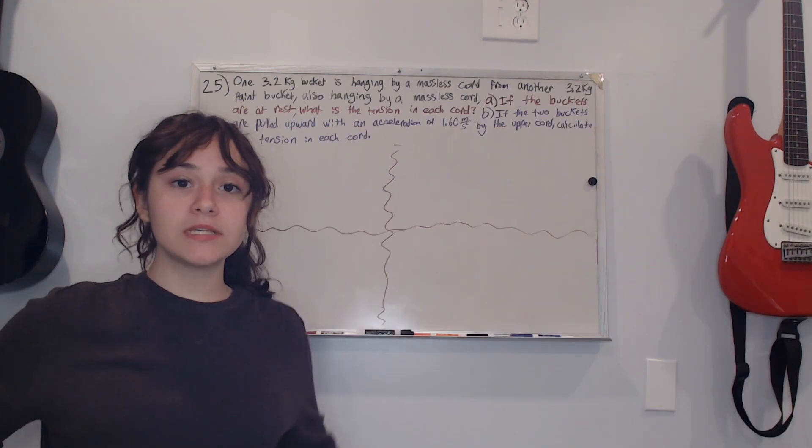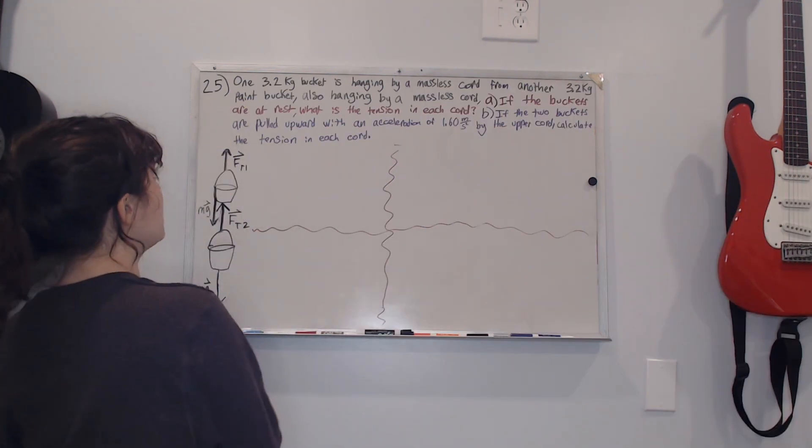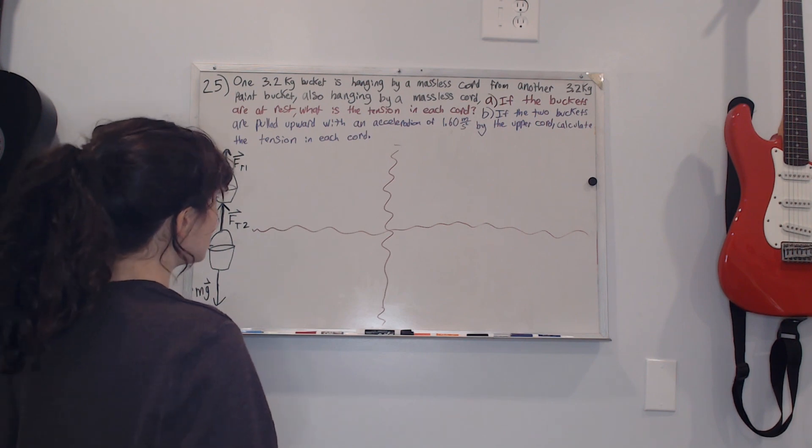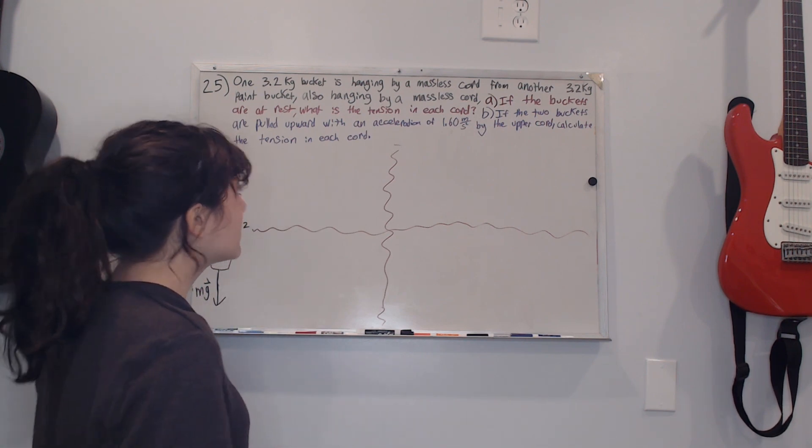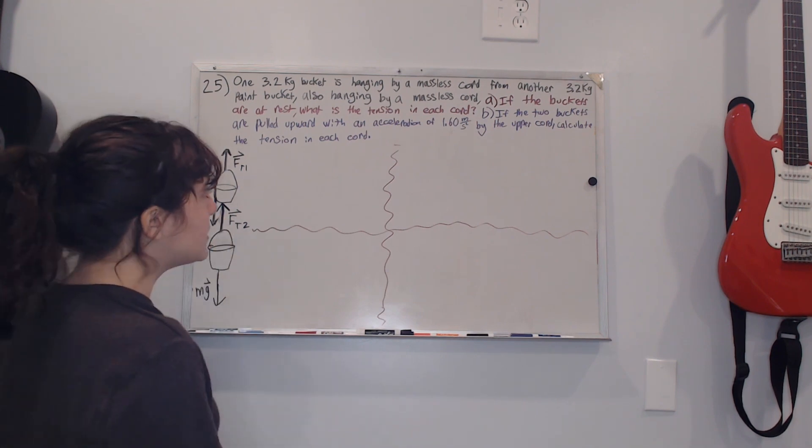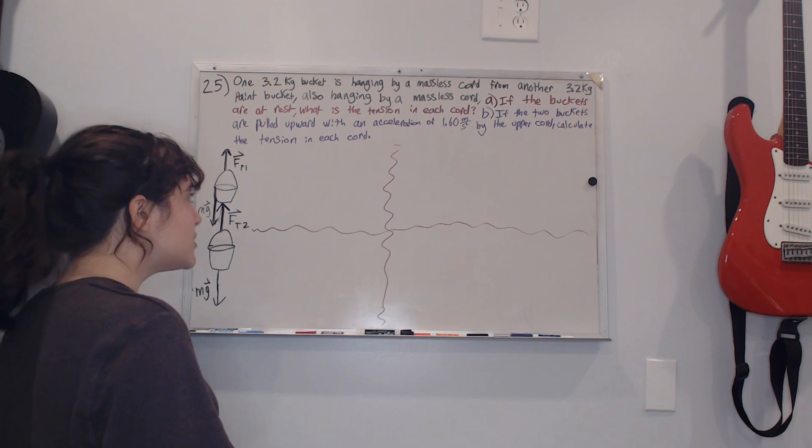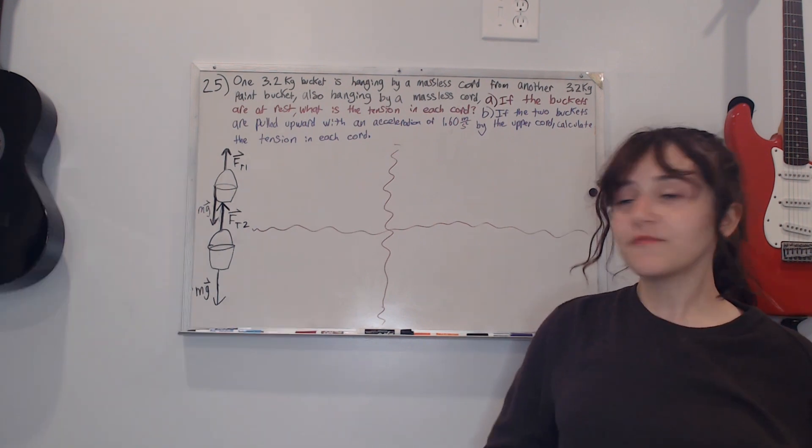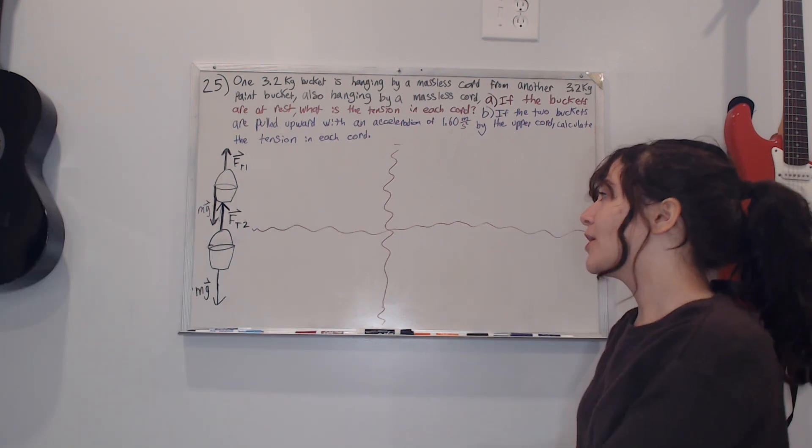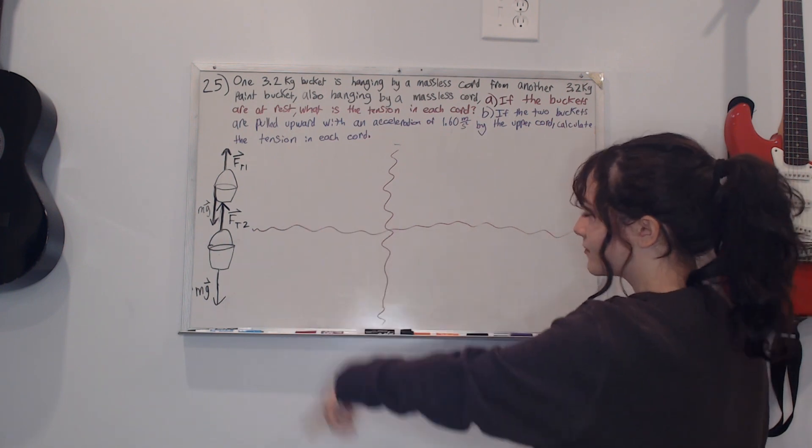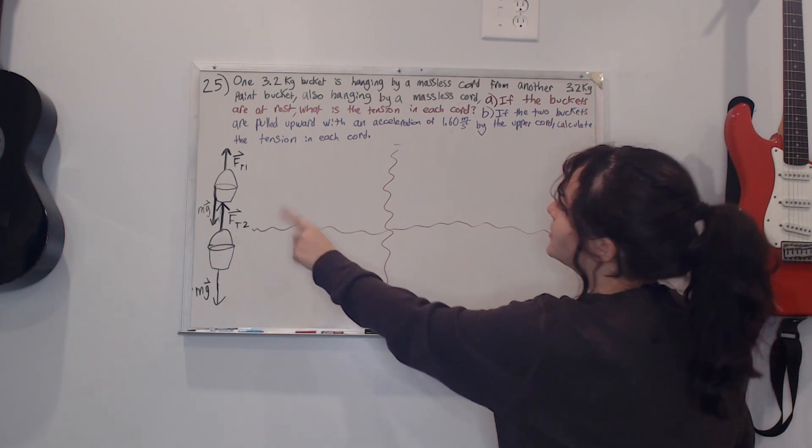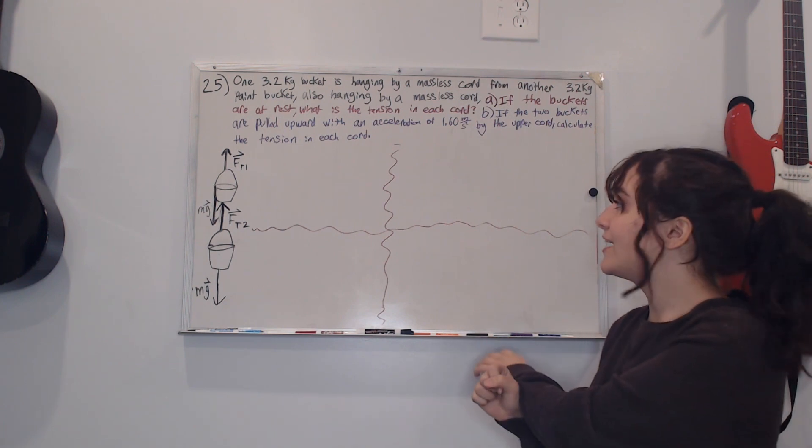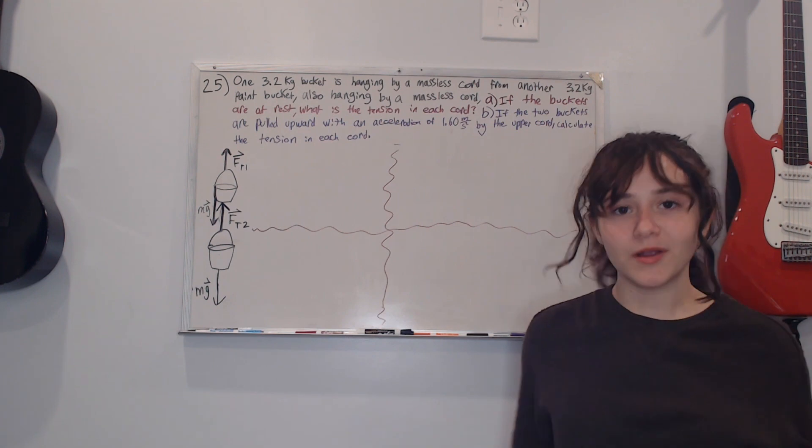This is number 25 on the homework and it says one 3.2 kilogram bucket is hanging by a massless cord from another 3.2 kilogram paint bucket also hanging by a massless cord. (a) If the buckets are at rest what is the tension in each cord? (b) If two buckets are pulled upward with an acceleration of 1.60 meters per second squared by the upper cord, calculate the tension in each cord. I started off by sketching out my free body diagram and I labeled each part: tension one, mg, also mg, and tension two. I also split off the different areas that I'm going to be working because I have limited space and I don't want to have to erase some parts of the problem just to write out another part.